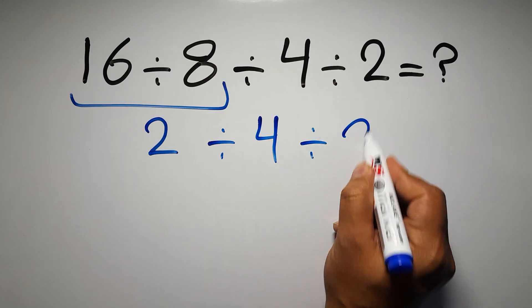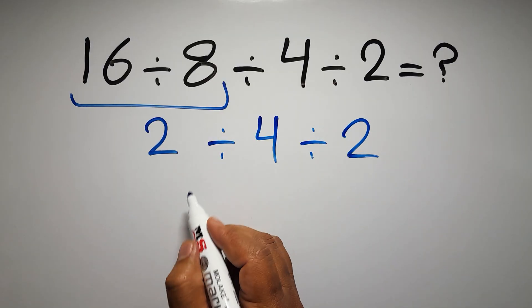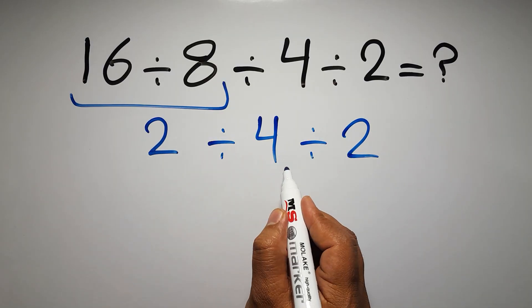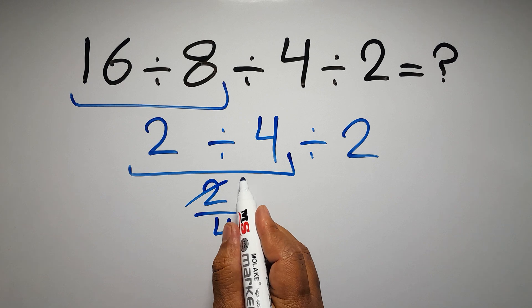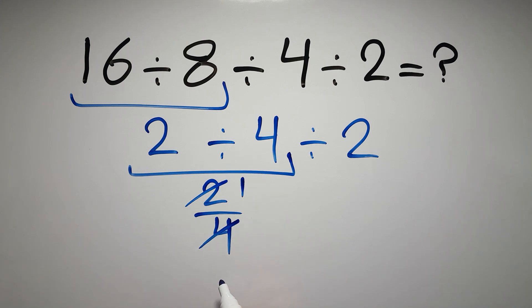Now we have to do this division: 2 divided by 4 can be written as 2 over 4. 2 divided by 2 gives us 1, and 4 divided by 2 gives us 2, so we have just 1 over 2.